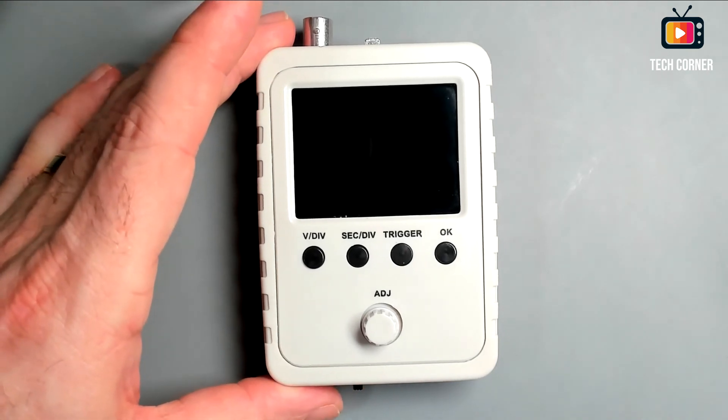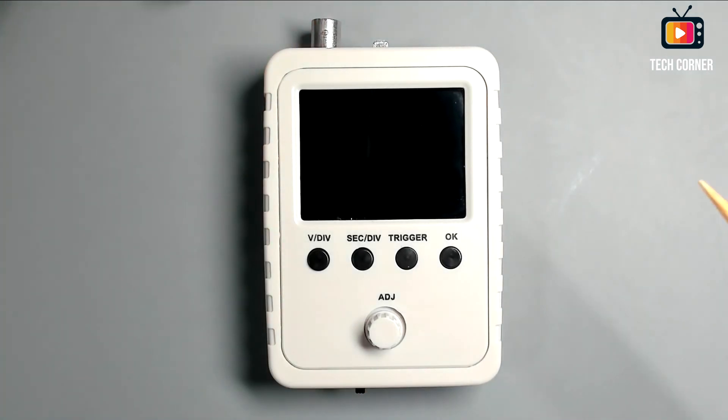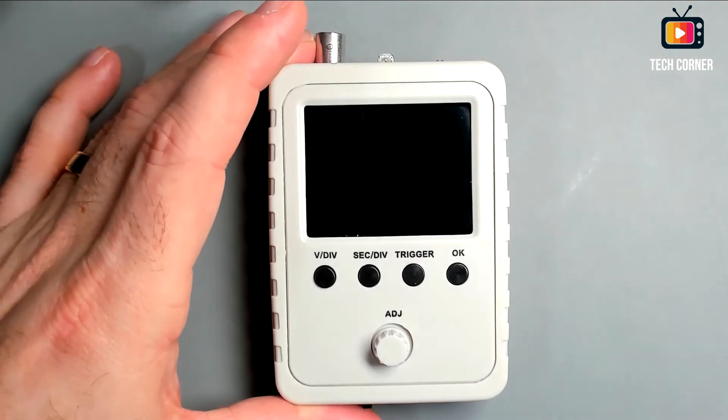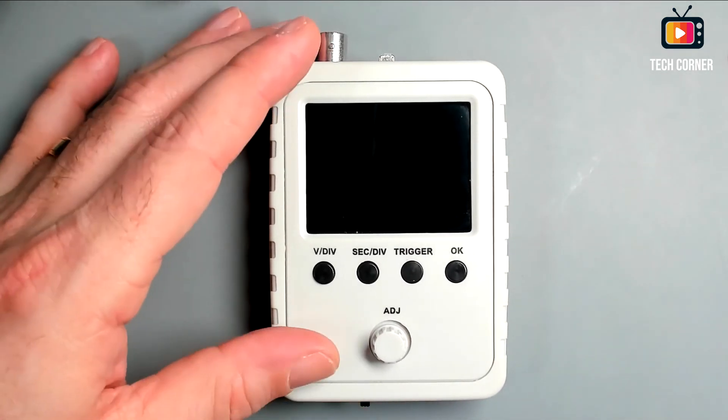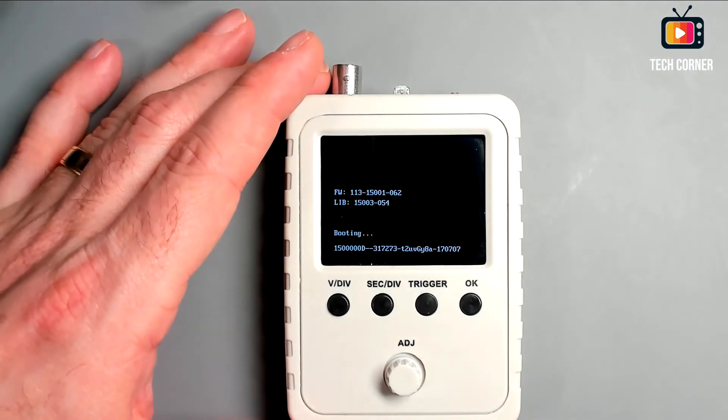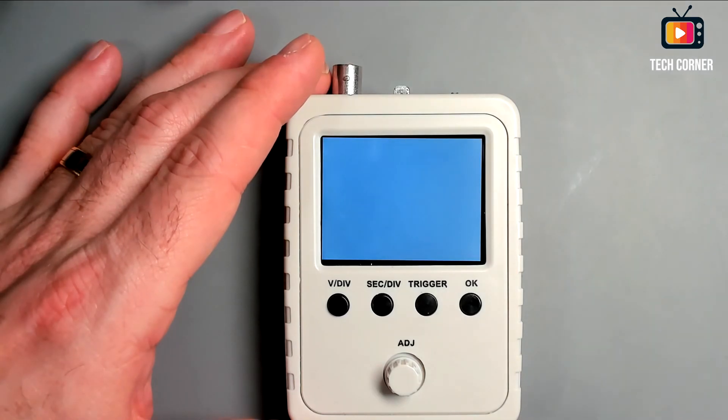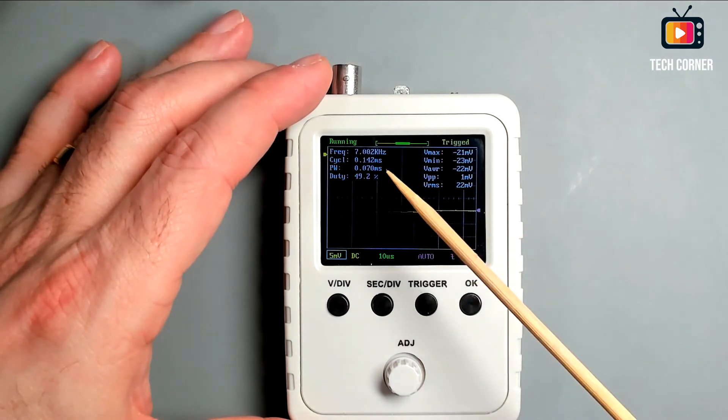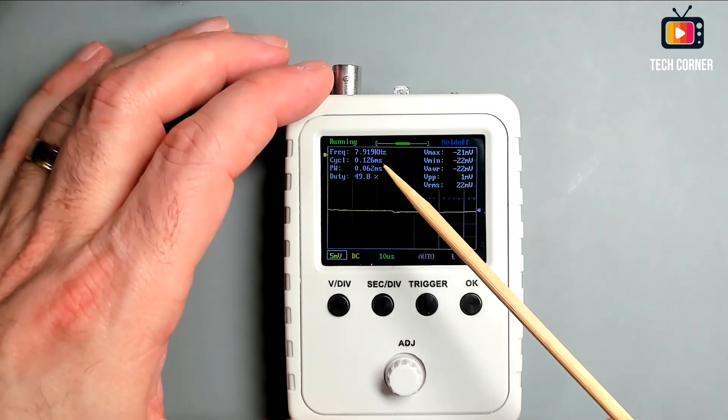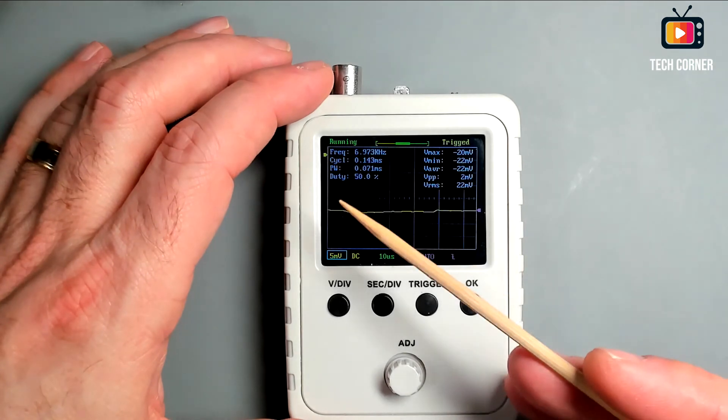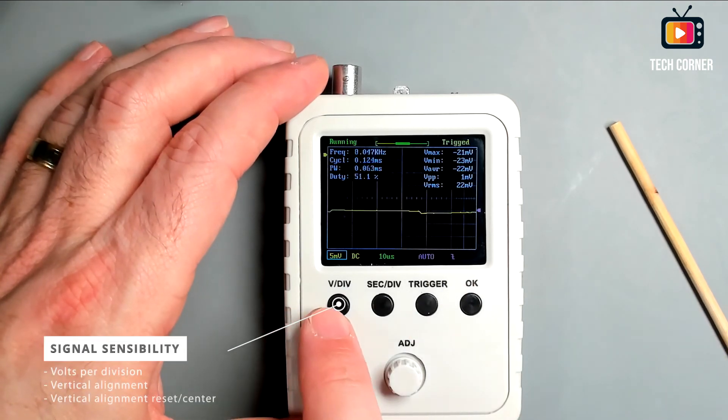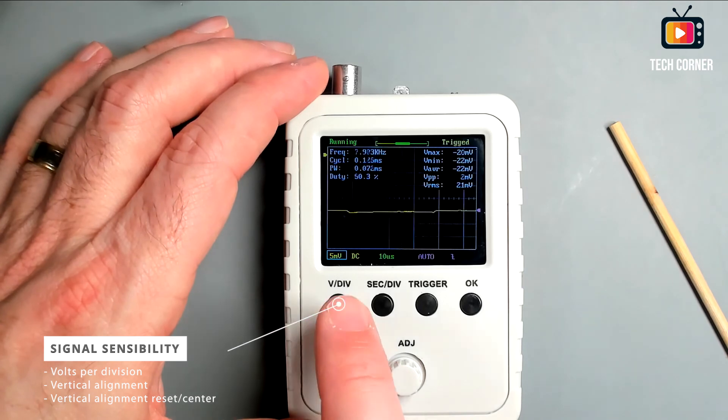As I already mentioned, the DSO 150 has four buttons and a knob for adjusts. Let me connect the power and start explaining the button usage. Right now the BNC connector is working as an antenna and capturing the RF signals that I have here in the workbench. And you can see here the interference of the radio waves. So the first button that we have here is the vertical alignment button or sensibility selection where we can change the voltage per division.